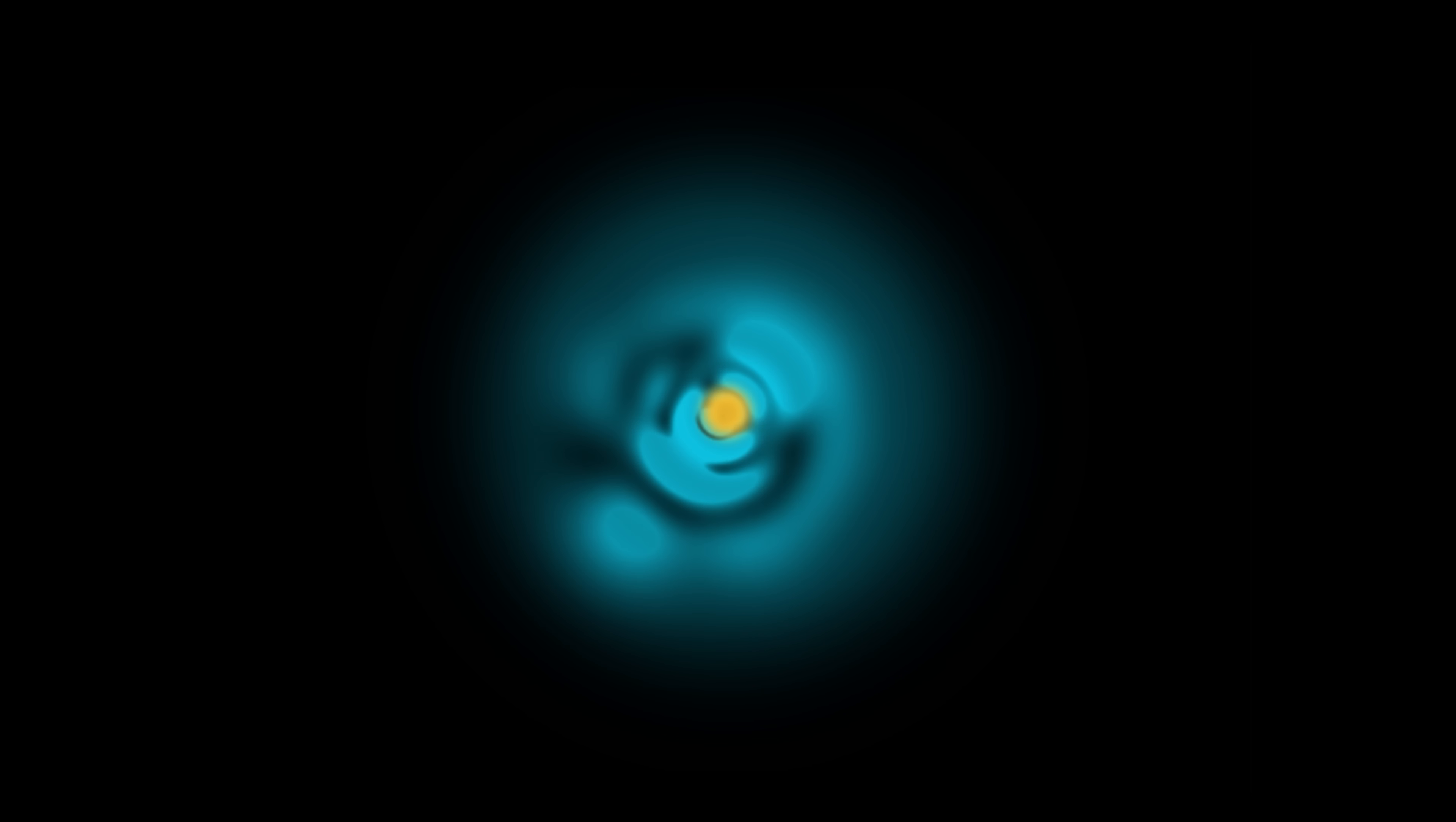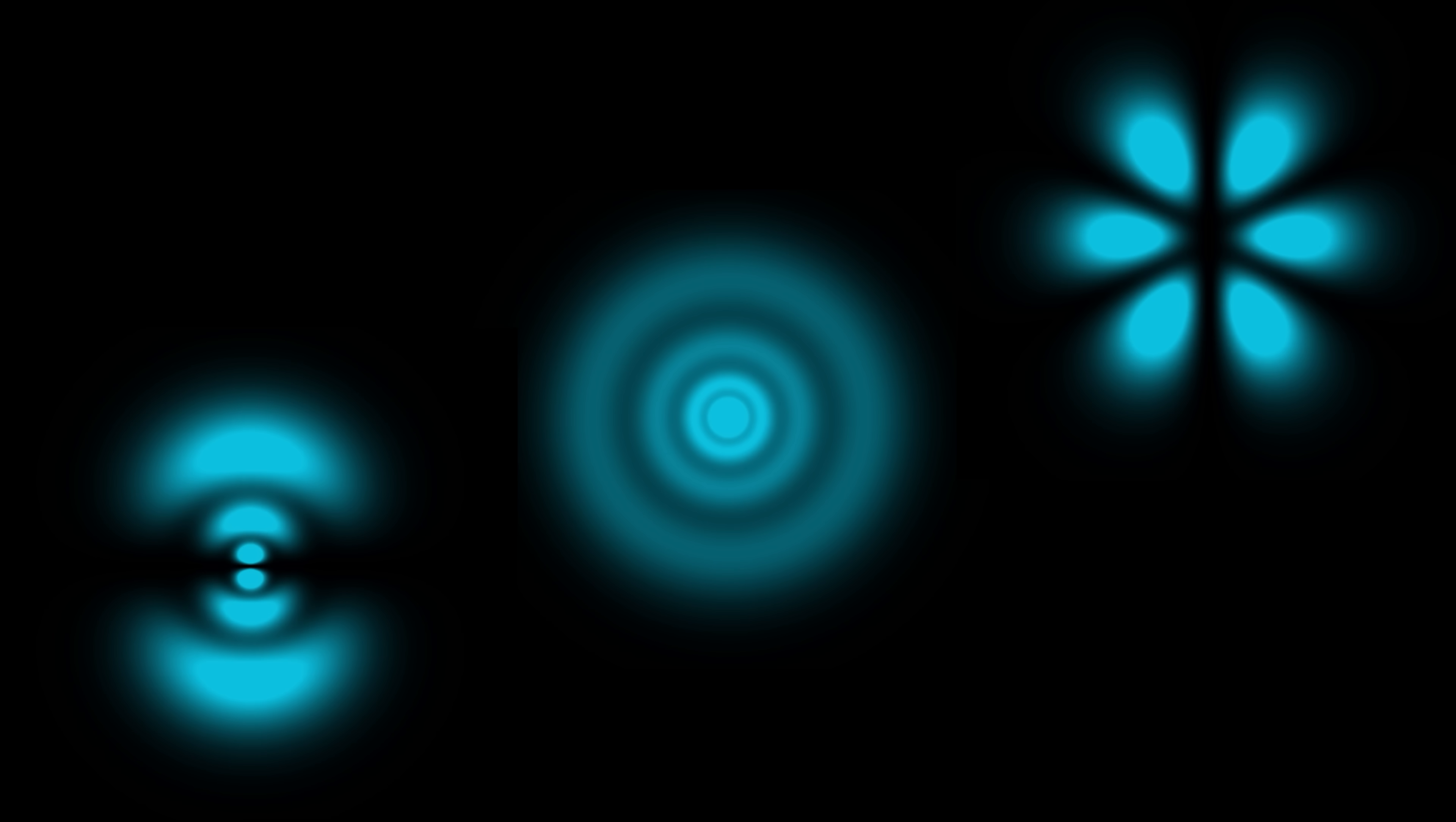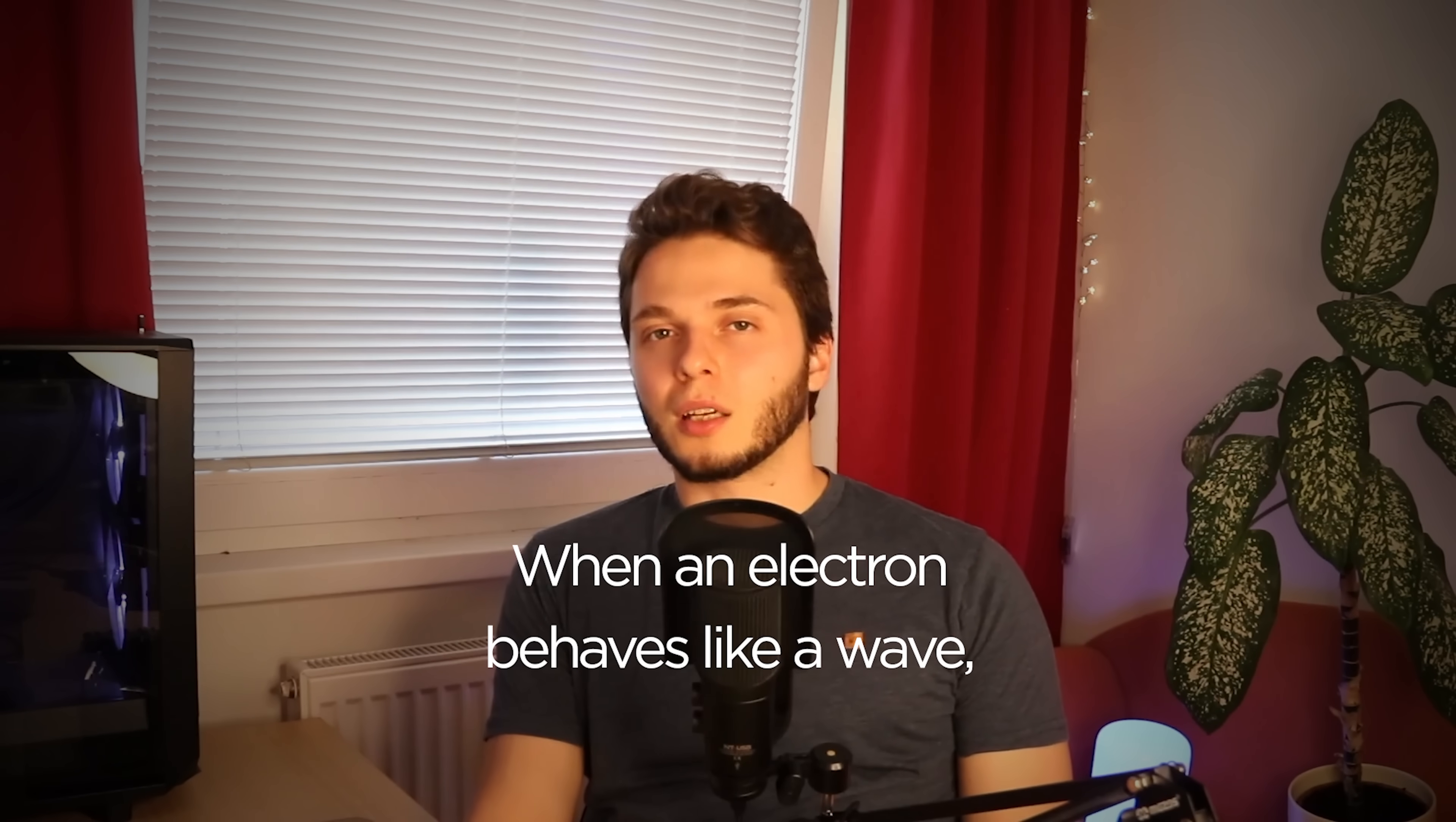Give it a little more time and the electron will settle into a stable shape. Like this, this, or this. You may know them as atomic orbitals. So somehow, when an electron behaves like a wave, it becomes stable. It does not fall into the proton. But why exactly? Don't waves just travel endlessly? So how come that the electron's cloud is just chilling there?